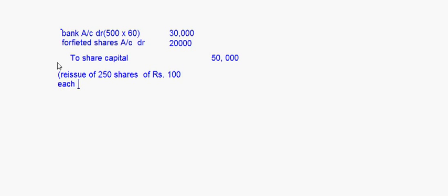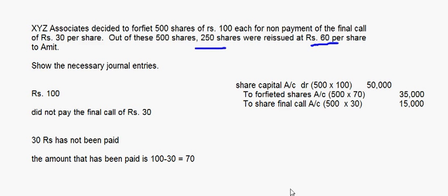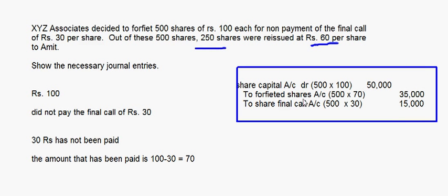This is for the reissue of 250 shares — remember this. The narration: reissue of 250 shares of Rs. 100 each, issued as fully paid up for Rs. 60 each. Now after that, the entry is Forfeited Shares Account debit, to Capital Reserve. Now look at this — the forfeiture entry we made: what is the amount credited to the Forfeited Shares Account? That is 35,000. We have to remember that this 35,000 is for 500 shares, whereas only 250 shares have been reissued.